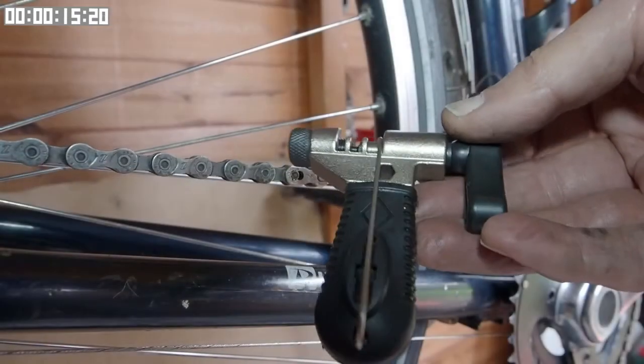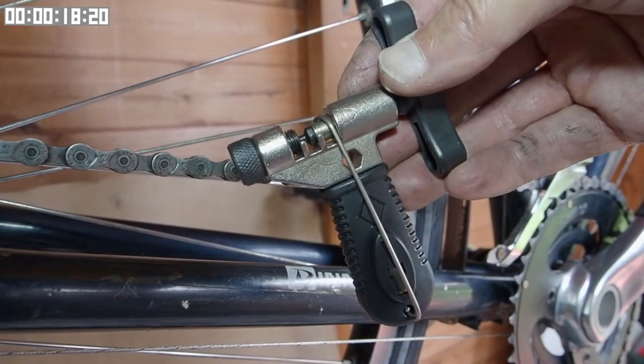The traditional way of joining and splitting a chain is to use one of these, a chain link extractor.